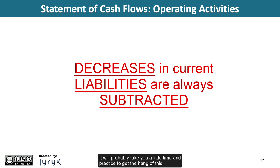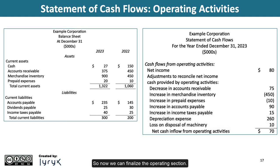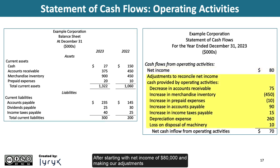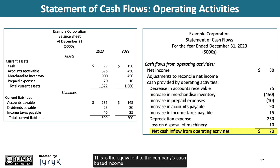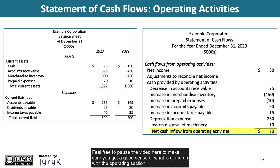It will probably take a little time and practice to get the hang of this. So now we can finalize the operating section. After starting with net income of $80,000 and making all our adjustments, we have determined that the net cash inflow from operating activities for example corporation was $70,000. This is the equivalent of the company's cash-based income.